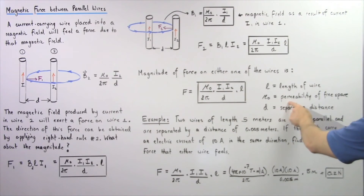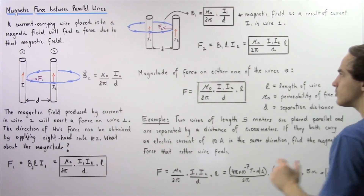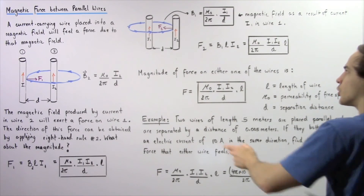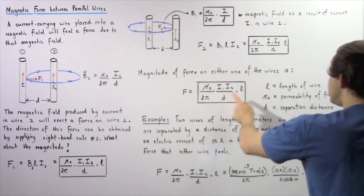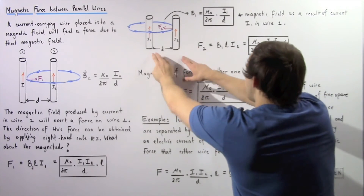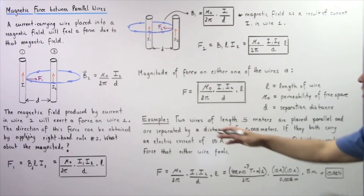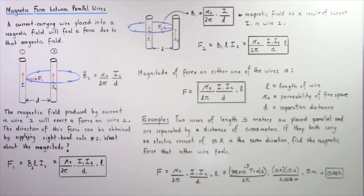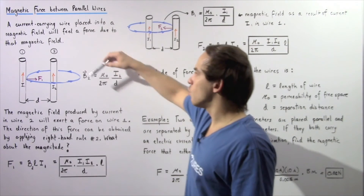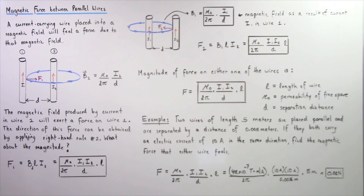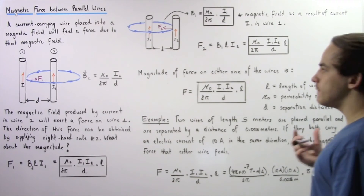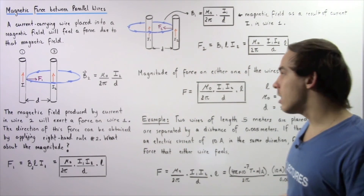In this equation, μ₀ is the permeability of free space, I1 is the current in wire one, I2 is the current in wire two, L is the length of the wire, and d is the separation distance between the two wires. Now let's apply this to an example: two wires of length 5 meters are placed parallel, separated by 0.005 meters, each carrying 10 amps in the same direction.